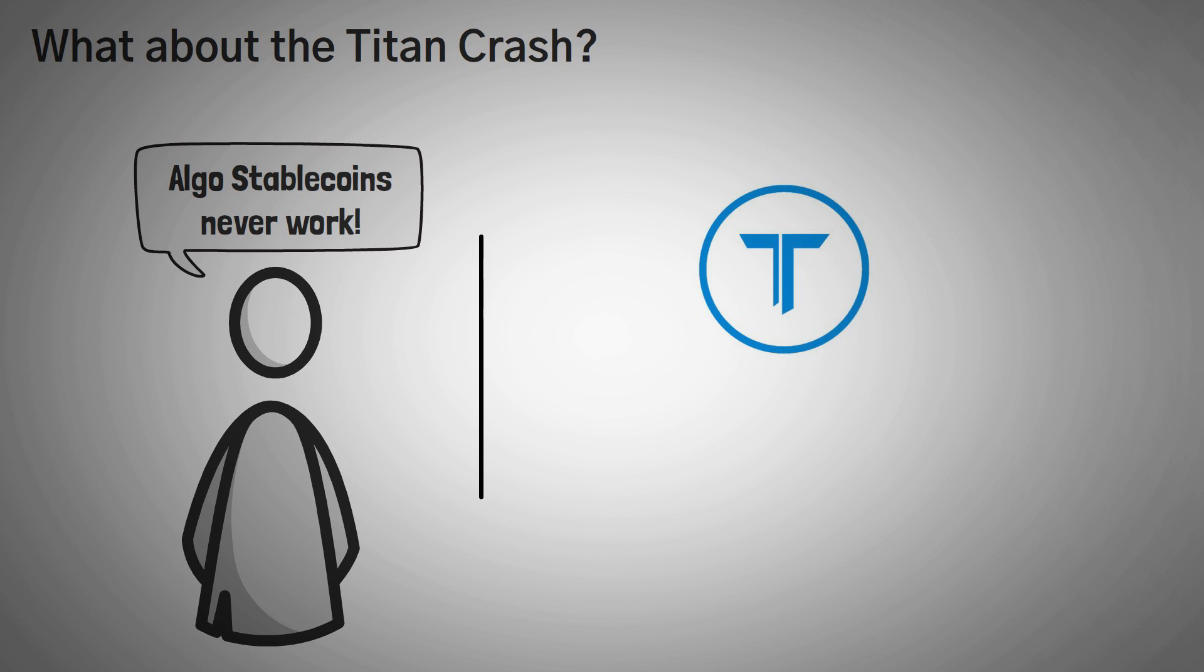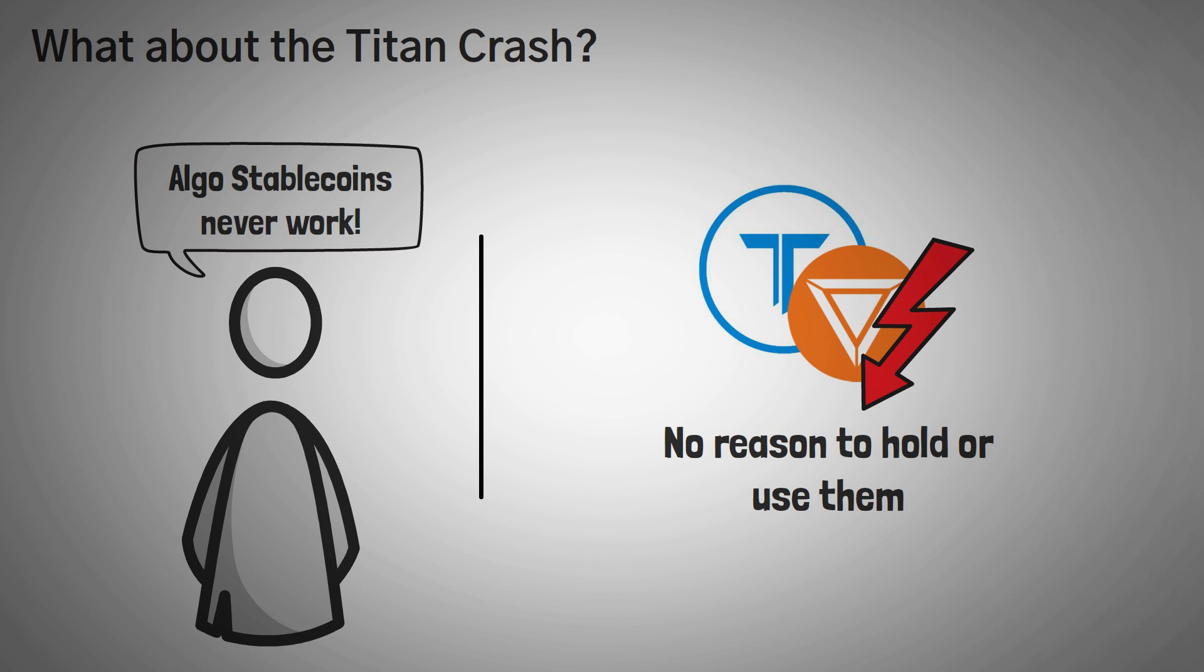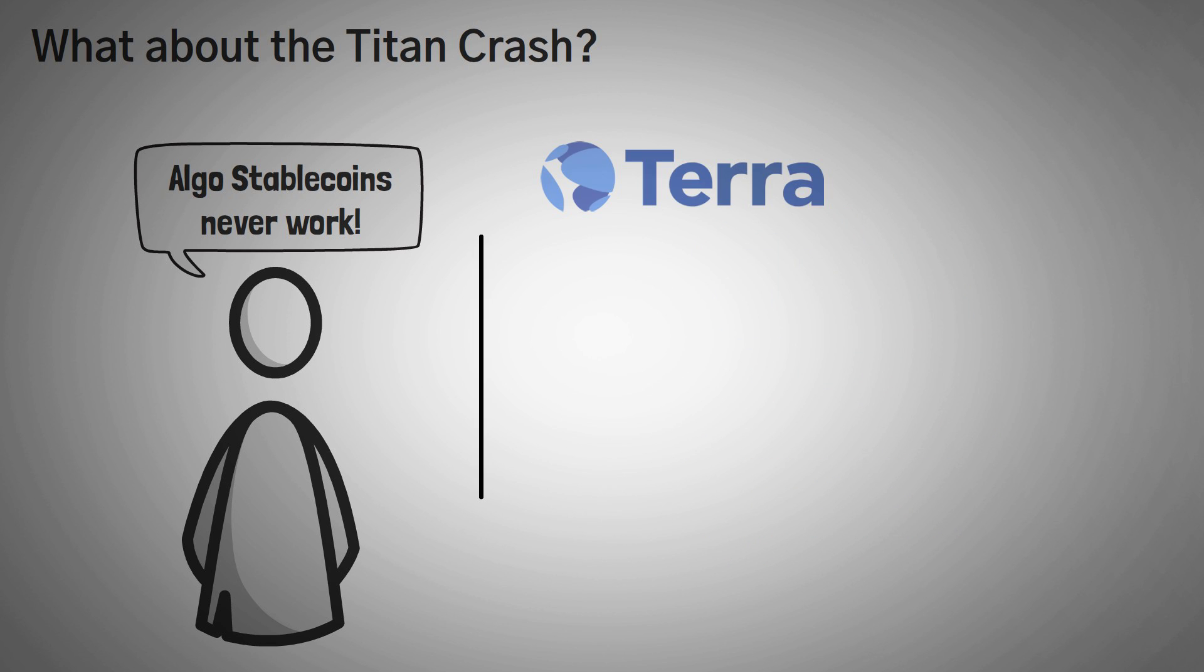I'm going to bring up the recent Titan and Iron Finance algorithmic stablecoin crash, because it seems similar. Well, when we dig into why they crashed, it was mostly because there was no reason to hold Titan or Iron, other than to use them to make more money. And this was essentially a Ponzi scheme in the crypto world. Now I venture to say that Terra is different, because they created a stablecoin with a purpose.